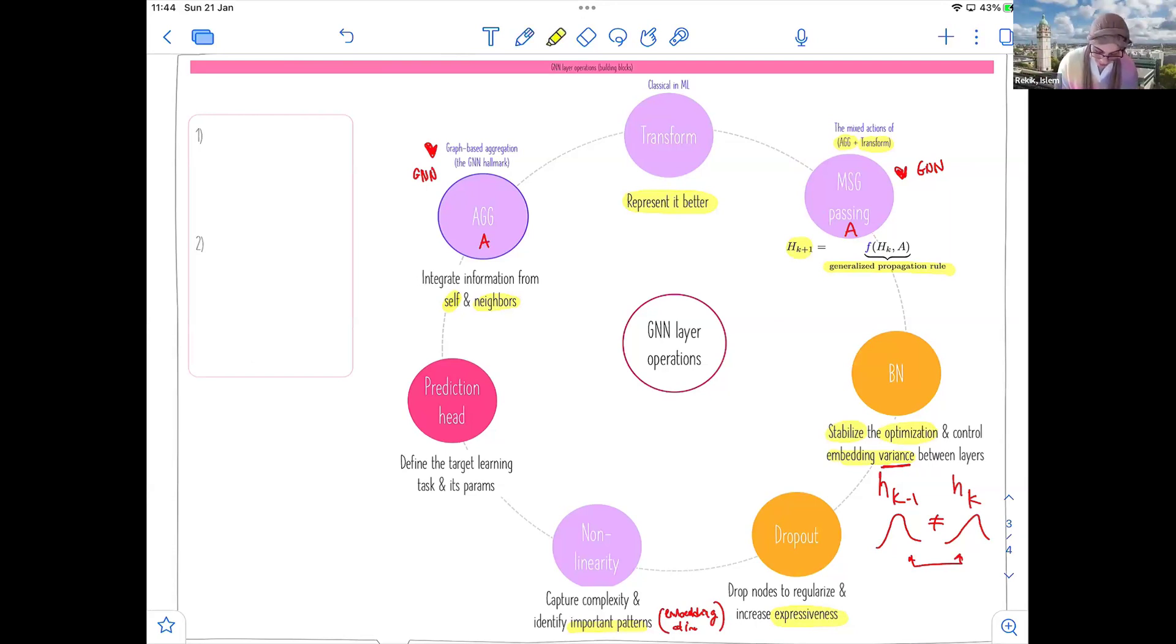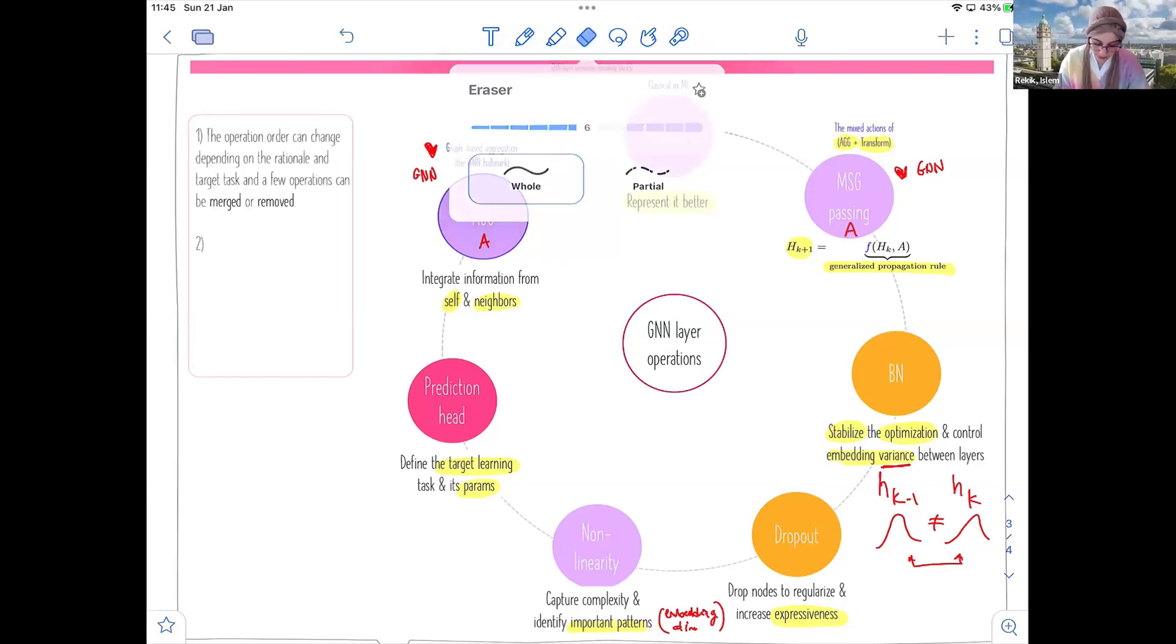Now, the last one is the prediction head. We need to define the target learning task, whether we're doing a node classification or edge link prediction, or a simple regression of the whole graph. Here we need to define these tasks and their parameters, and this comes after the nonlinearity, so after we do the whole embedding. This transformation will get us to the final embedding that we're going to have at some point.